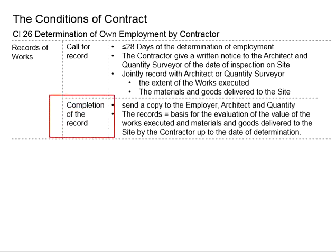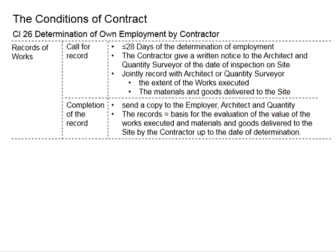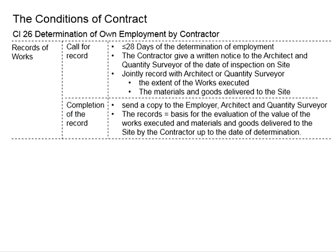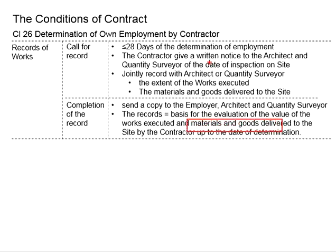The inspection should be done in the presence of the contractor, the architect, and the quantity surveyor. It is to determine the extent of work executed as well as materials and goods delivered to the site — this information is very important for the final account. Once the record is completed, the contractor sends a copy to the employer, architect, and quantity surveyor. This is slightly different from Clause 25, where the record was done by the architect or quantity surveyor. Here, the record is finalized by the contractor and sent to all parties. This finalized record is the basis for evaluating the values of work executed and materials delivered up to the date of determination.